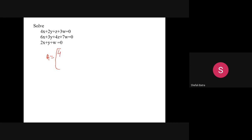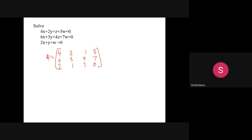Write the coefficient matrix: first row 4, 2, 1, 3; second row 6, 3, 4, 7; third row 2, 1, 0, 1. Note the third equation is 2x + y + 0z + w = 0, so the coefficient of z is 0 and coefficient of w is 1. Everyone should solve this in their notebook.